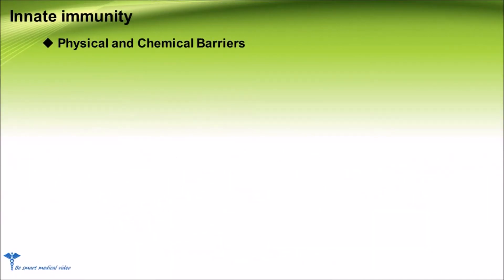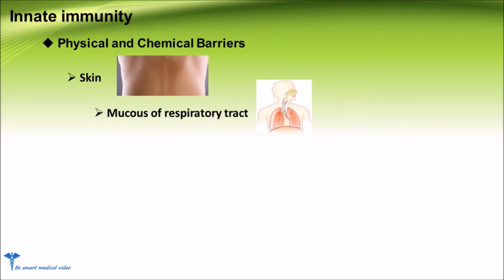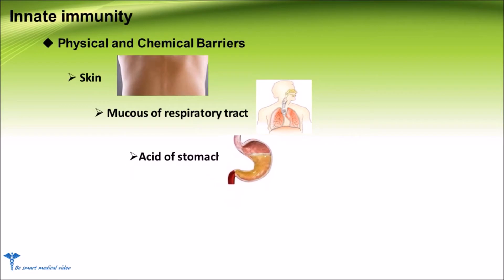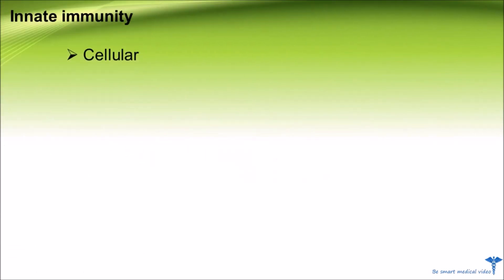The physical and chemical barriers of innate immunity include: number one, skin; number two, mucus of the respiratory tract; number three, acid of the stomach; and also tears and saliva, which help prevent infection of the eyes and mouth. Innate immunity includes cellular innate immunity and humoral innate immunity.